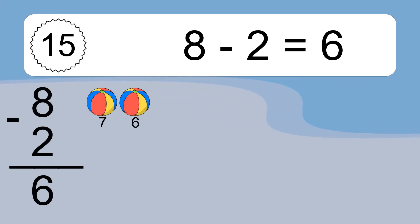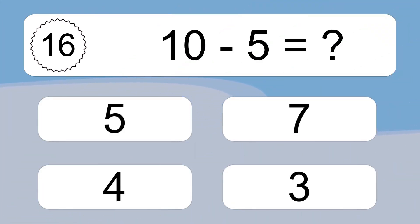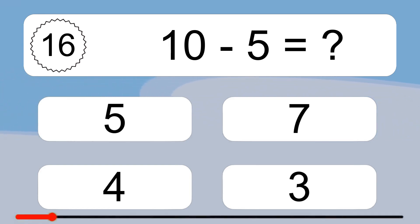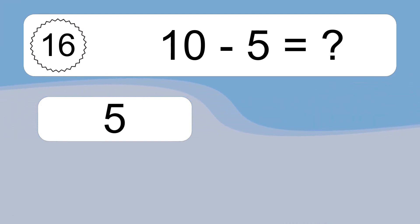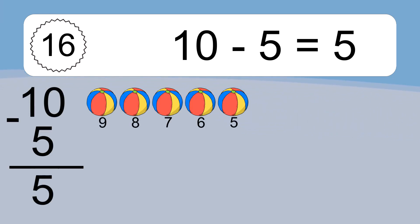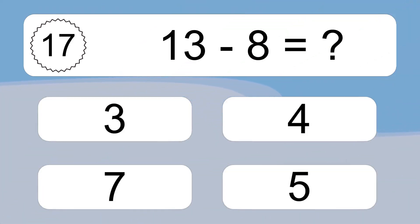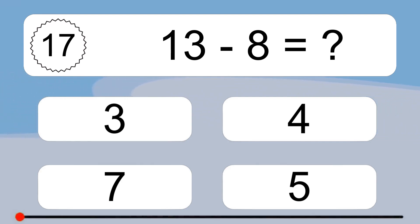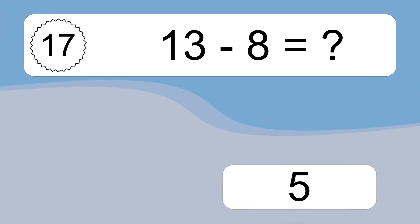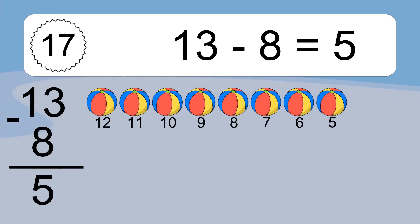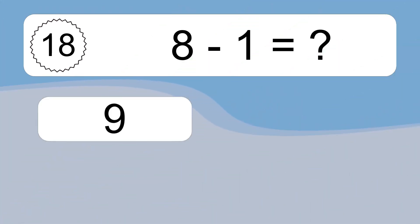8 minus 2 equals 6. Let's count it: 7, 6. 10 minus 5 equals what? 10 minus 5 equals 5. Let's count it: 9, 8, 7, 6, 5. 13 minus 8 equals what? 13 minus 8 equals 5. Let's count it: 12, 11, 10, 9, 8, 7, 6, 5.